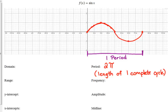The frequency is right below period there. Frequency refers to how many cycles are completed within 2π units. So the frequency here is simply 1. This is the number of cycles completed between 0 and 2π.